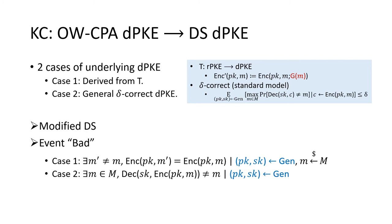To deal with the correctness error, we use a modified DS notion, which will be described later, and we use an event to separate some bad cases in the proof.